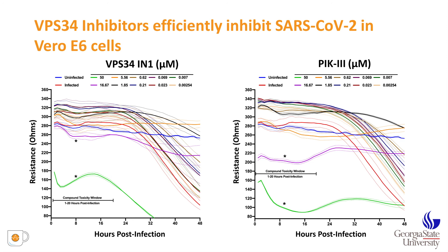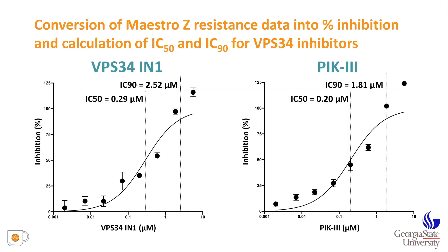This slide depicts antiviral activities of two VPS34 inhibitors: inhibitor 1 and PIK3. Using a 10-point dose-response curve, the Maestro-Z readily detects cytotoxicity at high concentrations — 15 and 16 micromolar cause a rapid drop in resistance. However, intermediate and lower concentrations enable cells to survive longer than mock-treated infected controls shown in the red curve. We obtained IC50s below 1 micromolar and 90% inhibitory concentrations in the 2 to 3 micromolar range for both inhibitor 1 and PIK3.